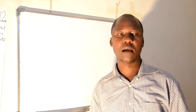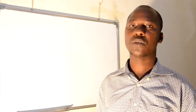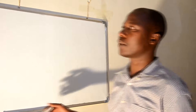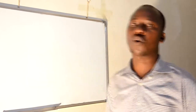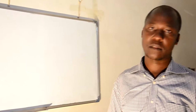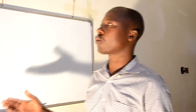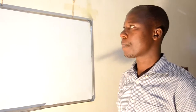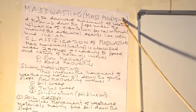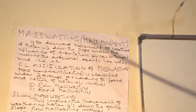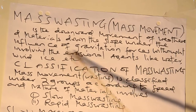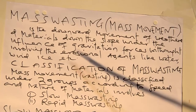Let's proceed with another subtopic called mass wasting or mass movement. This is a subtopic which originated after the reaction or effect of weathering. Mass wasting or mass movement is a downward movement of weathered materials down the slope under the influence of gravitational forces, without involving erosion agents like water, wind, and ice.